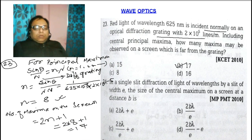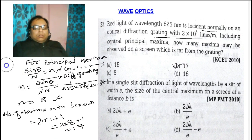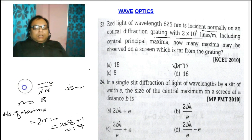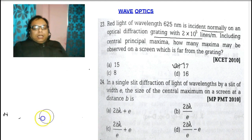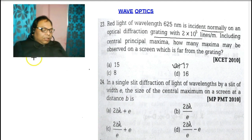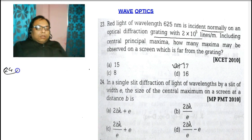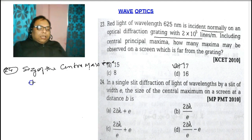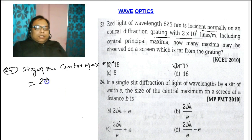Now let's see question number 24. In a single slit diffraction, a light of wavelength λ passes through a slit of width E. The size of the central maxima on a screen at distance B is — what is the size of the central maxima? The formula for size of central maxima is 2D·θ + a.